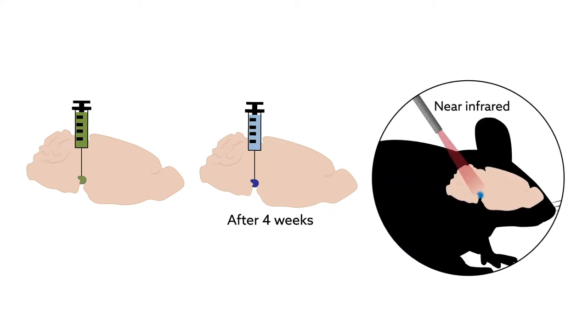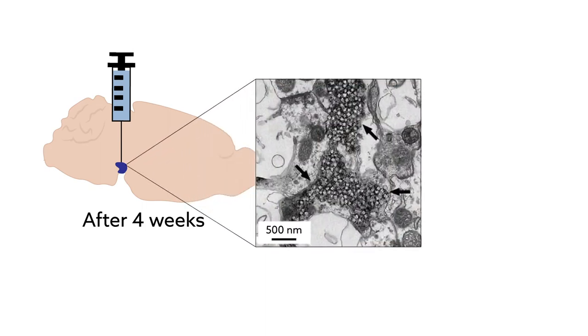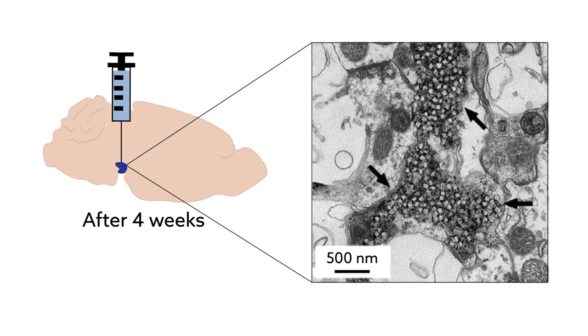The scientists injected the nanoparticles into different brain regions in mice and then applied transcranial near-infrared stimulation, providing a minimally invasive way to manipulate brain activity. They found that the nanoparticles largely remained at the site of injection, which gave a high level of control in targeting specific areas.